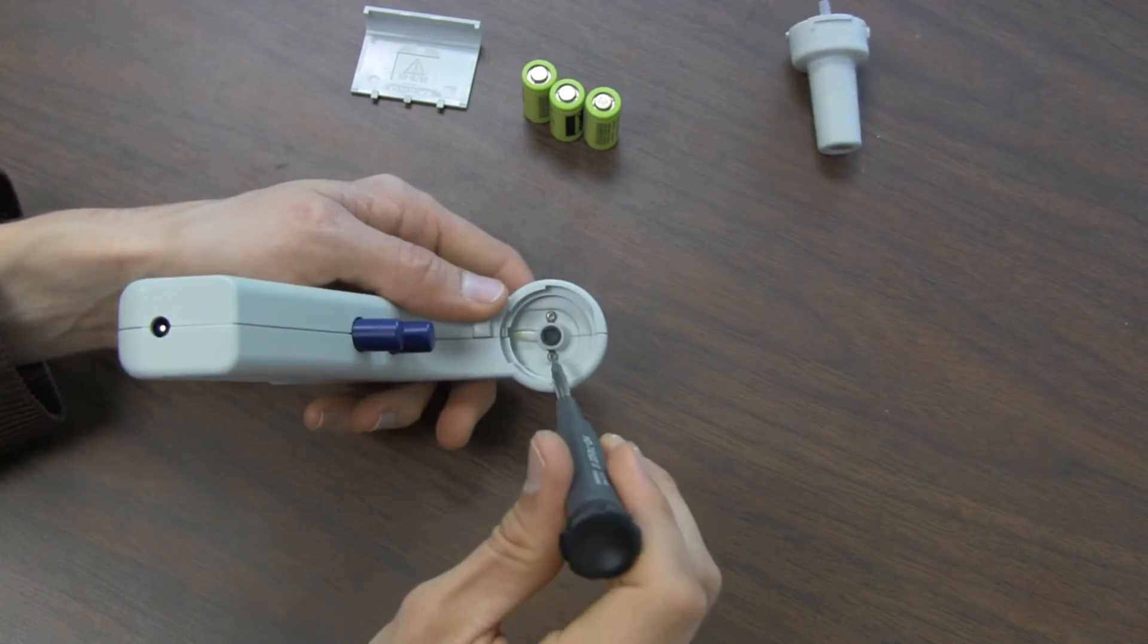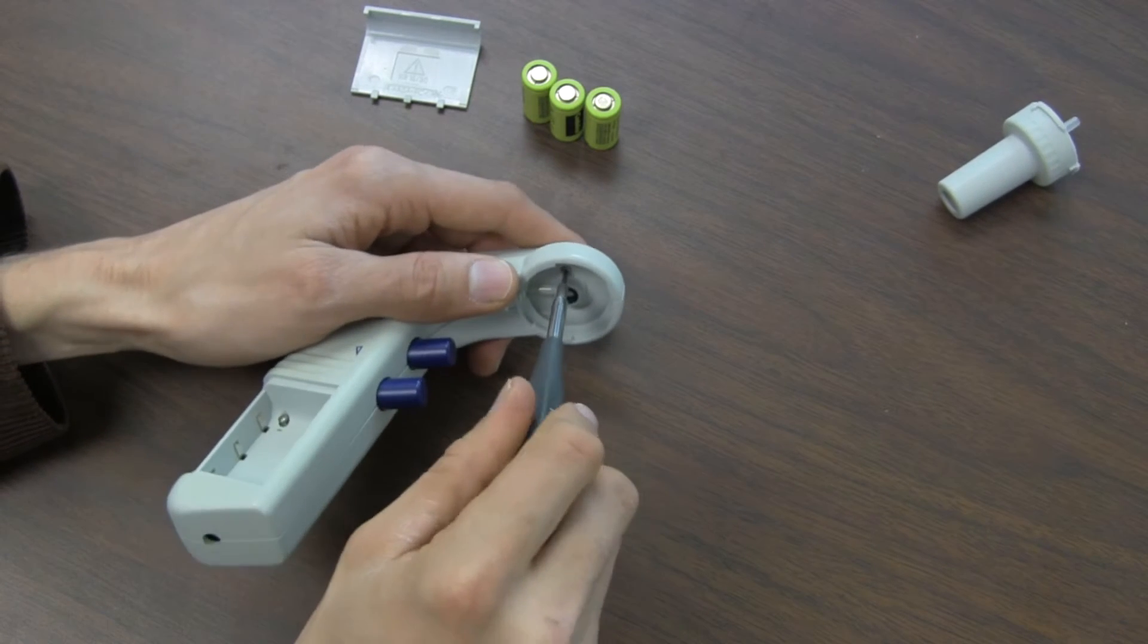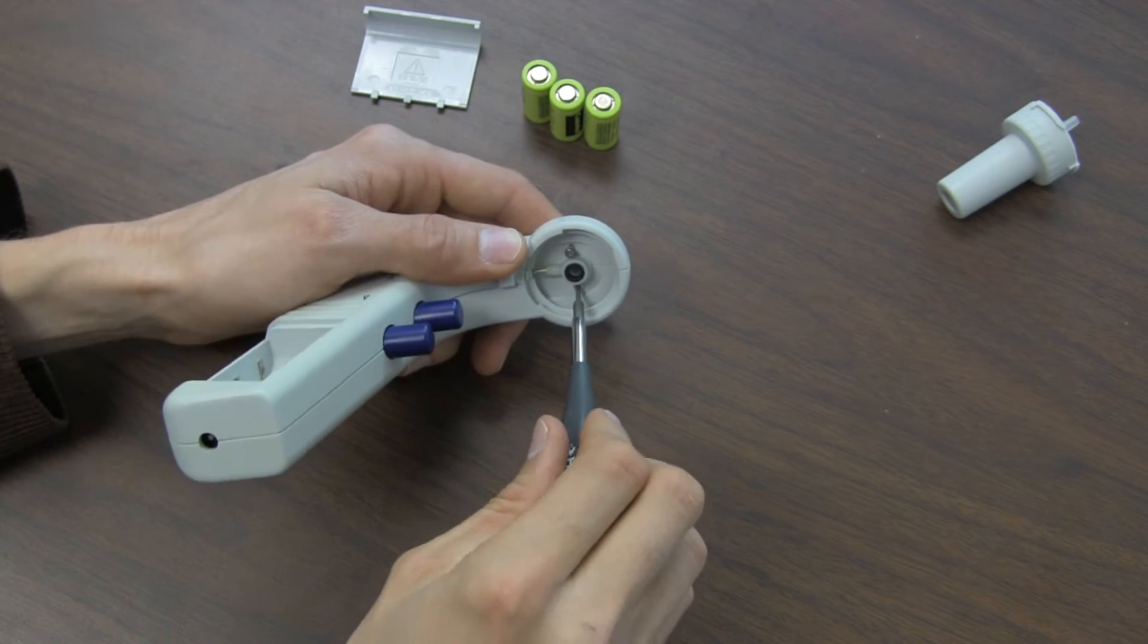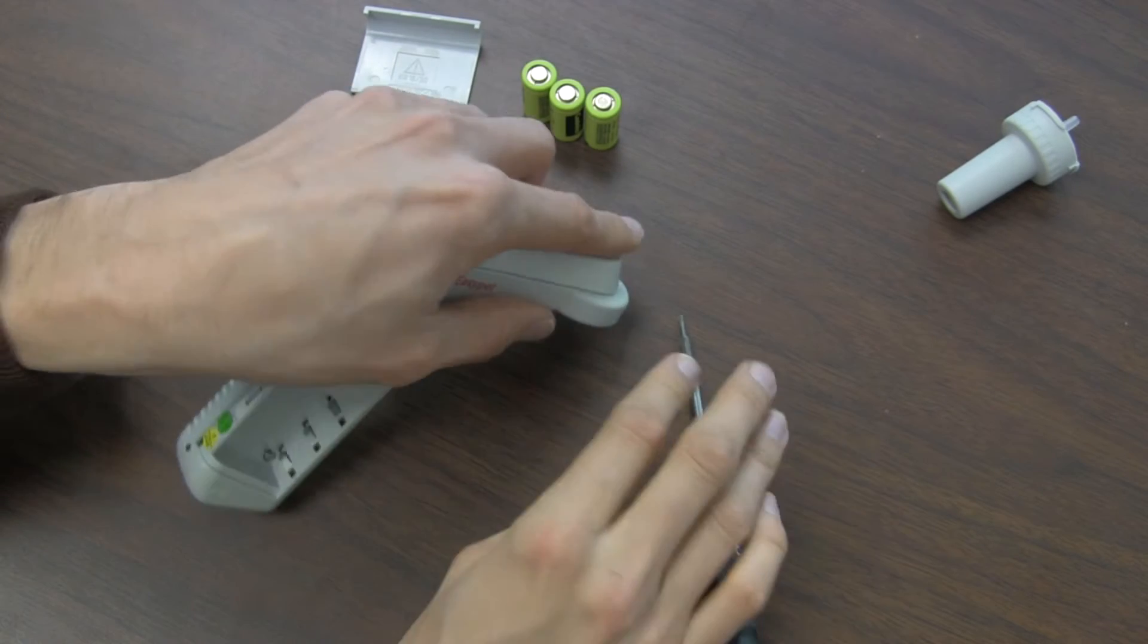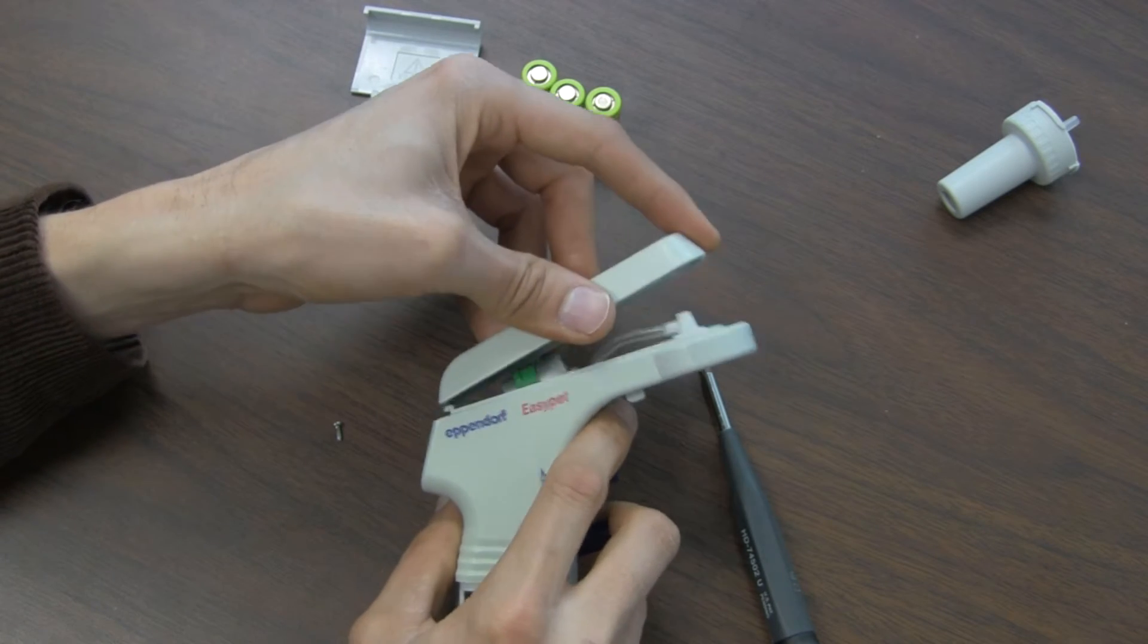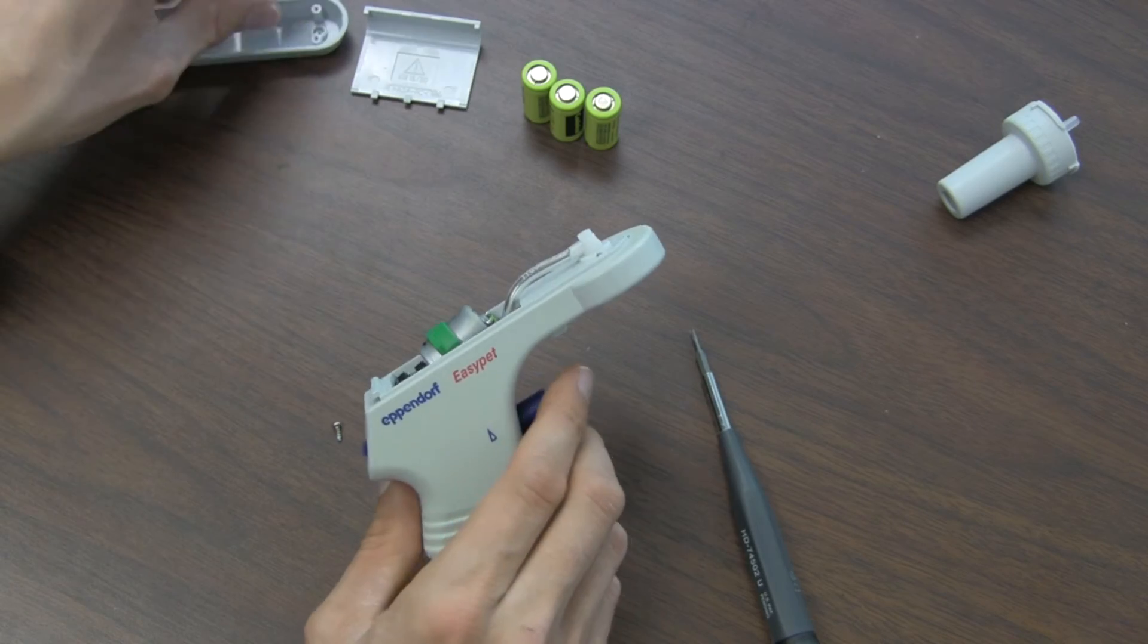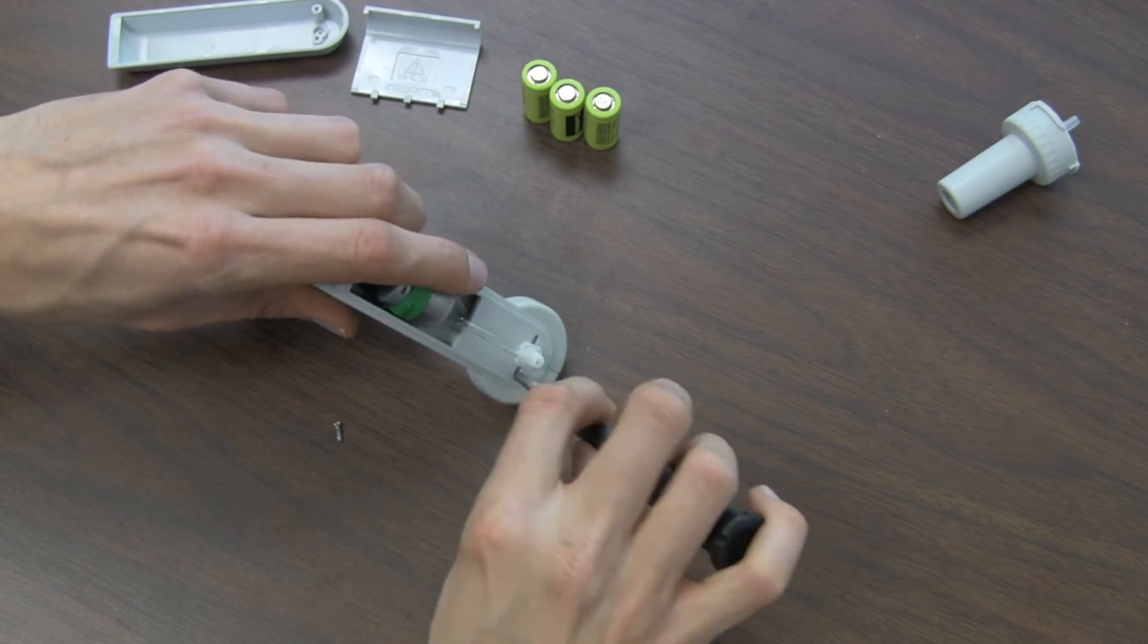And then you'll find there's two more screws in here that need to be undone. Same size, Torx T6. Then you can lift the top up and pull back. So the motion was lift up and then pull back to remove this top. And remove the screw.